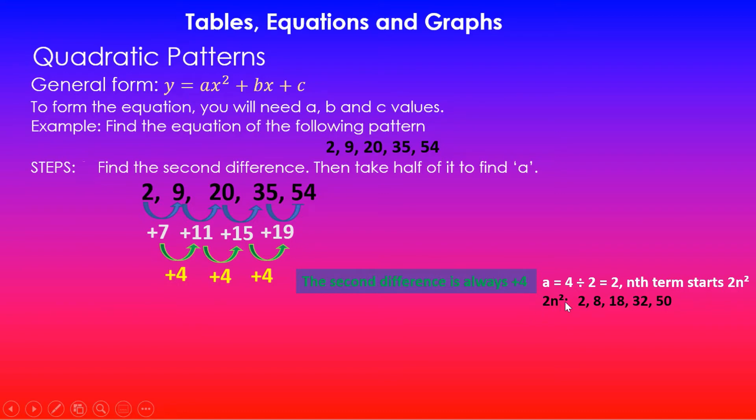Now I've got the 2n squared sequence here. So if n is 1, 1 squared is 1, 1 times 2 is 2. If n changes to 2, 2 squared is 4, 4 times 2 is 8. If n is 3, 3 squared is 9, 9 times 2 is 18. Likewise, you can get 32 here. 4 squared is 16, 16 times 2 is 32. So this is the sequence for 2n squared. Why I've got 2n squared is because the a value is 2.